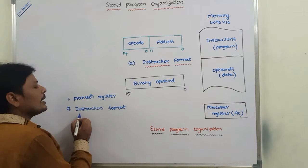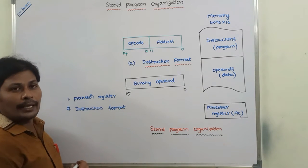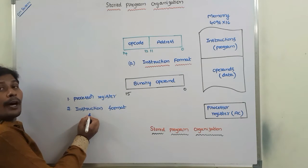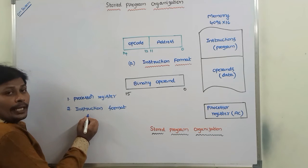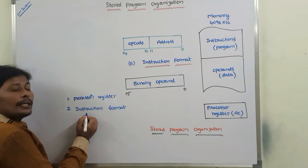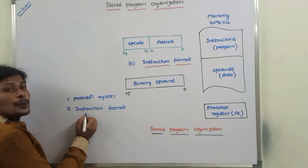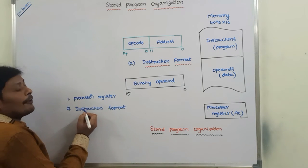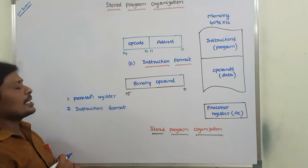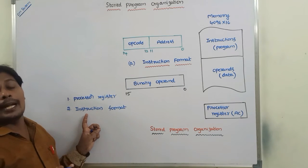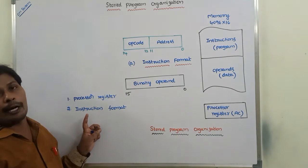The second one is instruction format. Instruction format is used for representing the instructions in the memory. The format that we use to store the instructions in a computer is called as instruction format. Generally, instruction format is either 16-bit format or 32-bit format.